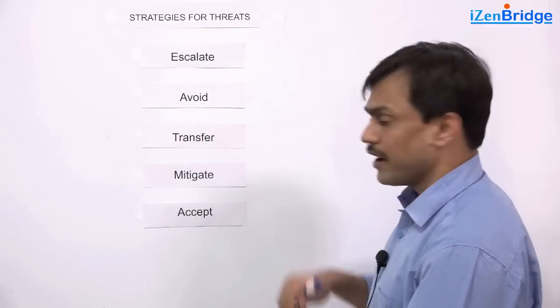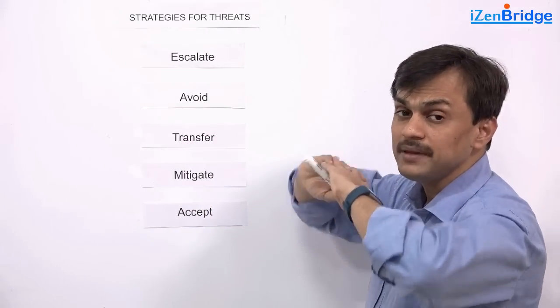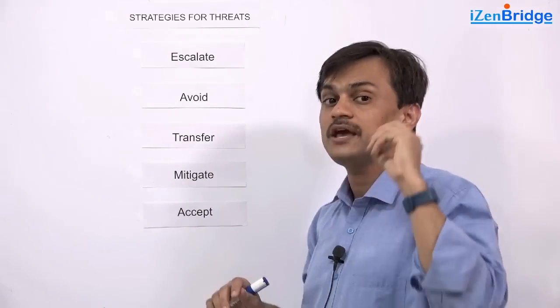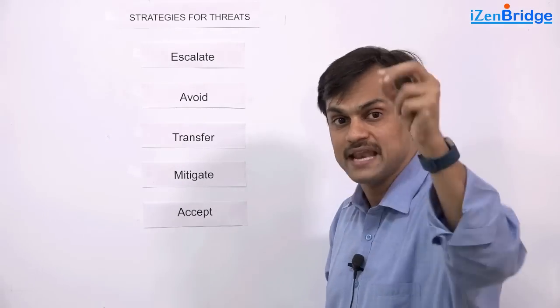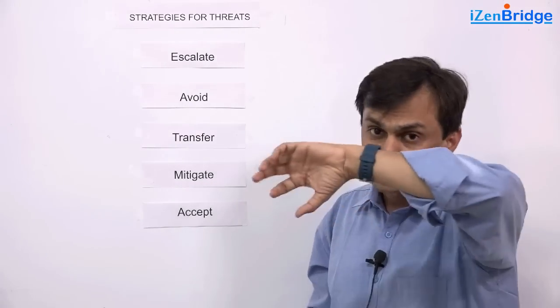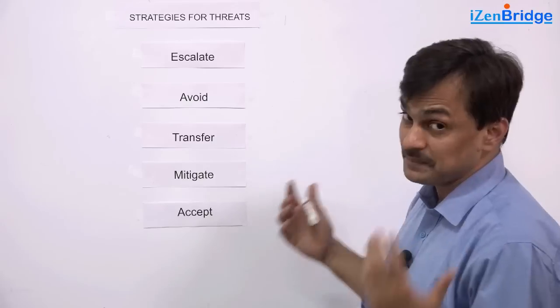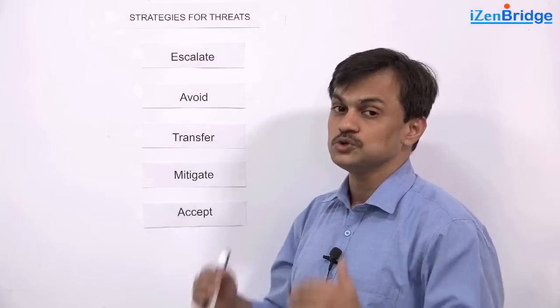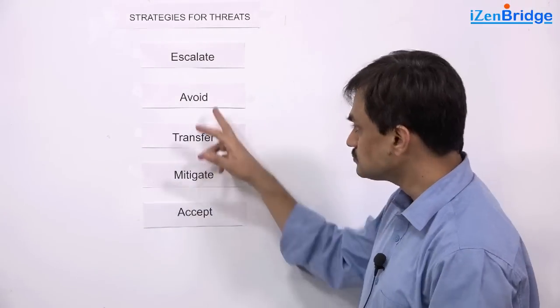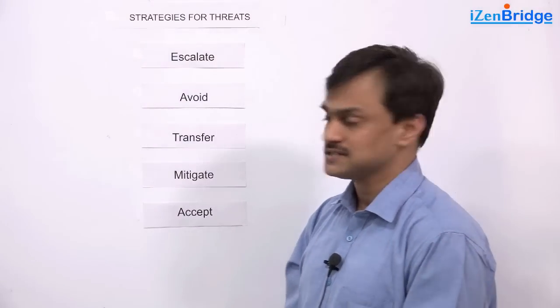When we look at avoid, avoid is either we make impact zero or we make probability zero. Means the risk doesn't remain risk anymore because we remove the roots of it. And may not be possible for every risk but it might be needed for dangerous risks. You try to avoid them. You don't do that option which becomes risky.